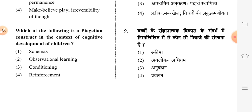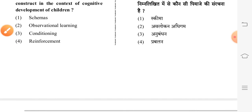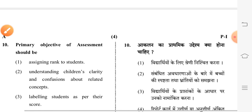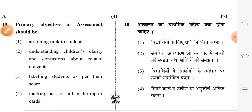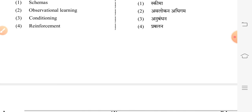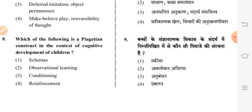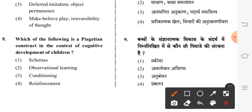Next question: which of the following is a Piagetian construct in the context of cognitive development of children? First option is correct: schemas. Note that Piaget, Vygotsky, and Noam Chomsky are very important topics for this exam.